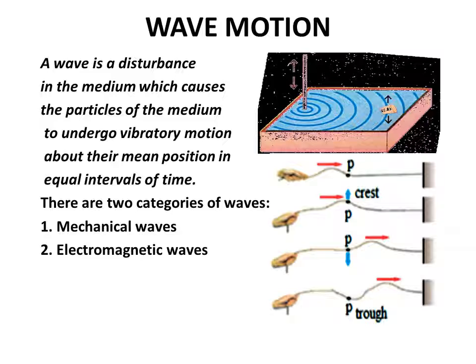the cork moves up and down about its original position while the waves travel outward. The net displacement of the cork is zero. The cork repeats its vibratory motion about its mean position. So this is an example of wave motion.